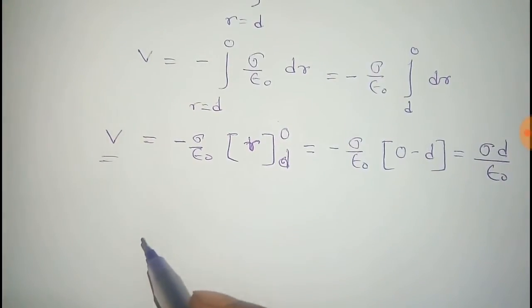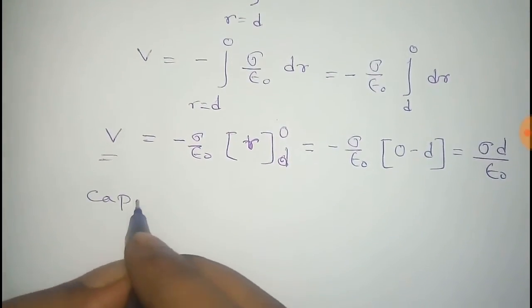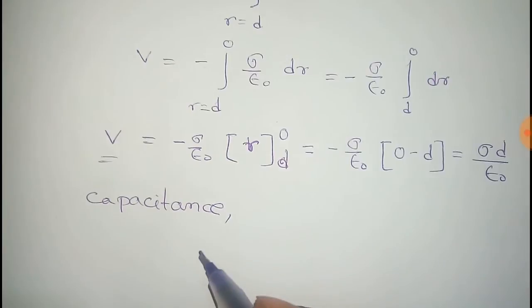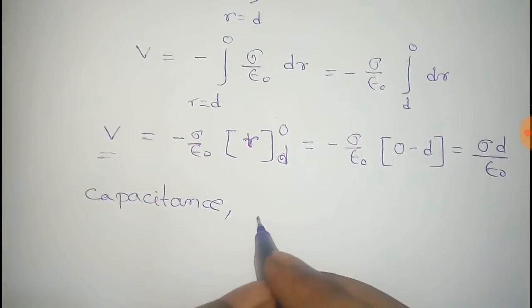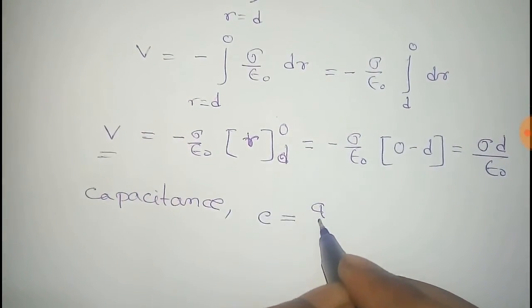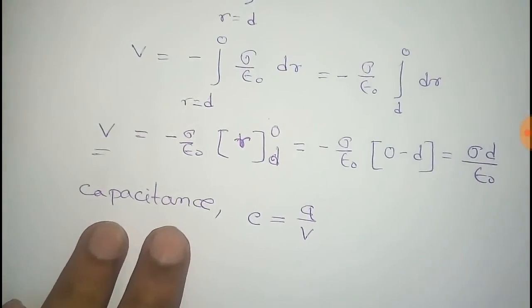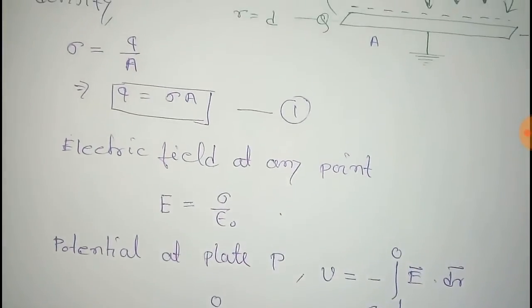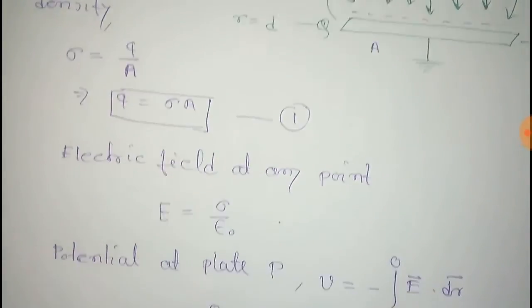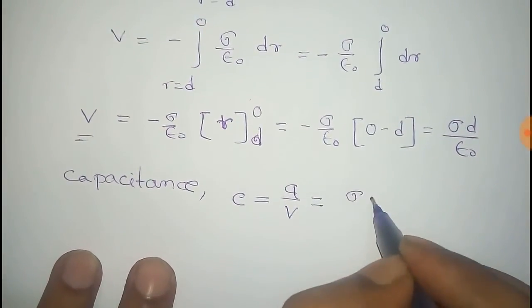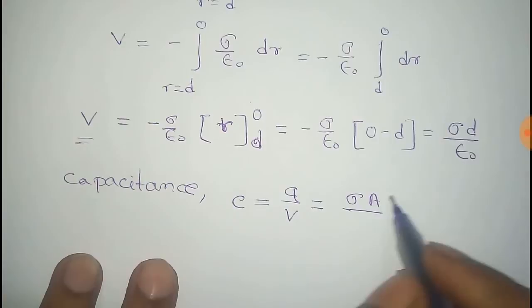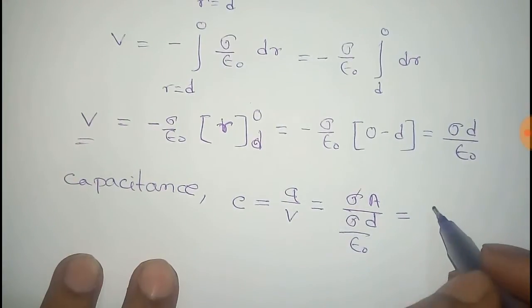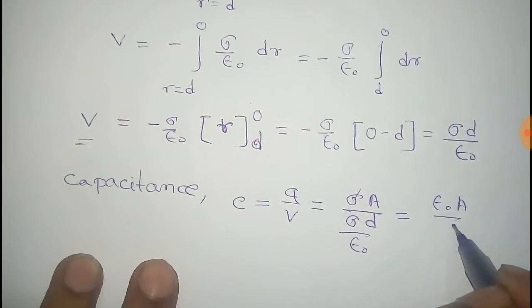Now we know that the capacitance C equal to total charge by potential of any plate. So the charge of any plate is Q and the potential is V. So we put the value of Q there. Q is given by σ into A. σ is the charge density, so we put this value from equation 1, σ into A, and the potential V is given by σd by ε₀. And from that the remaining part will be ε₀A by d. This is the capacitance for this two plate.